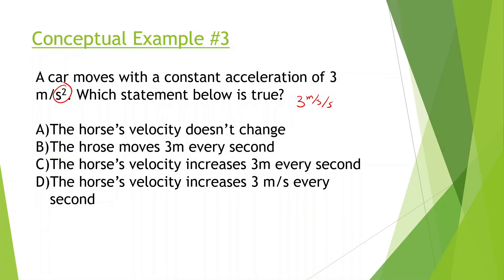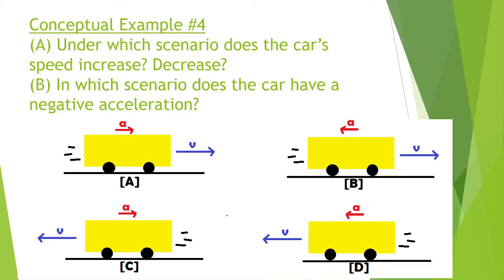So three meters per second per second — which statement below is true? The answer is D: the velocity increases three meters per second every second. What this means is every second it's getting three meters per second faster. So the first second it's going three meters per second, the second second six meters per second, the third second nine meters per second, and so on — every second it's getting three meters per second faster.